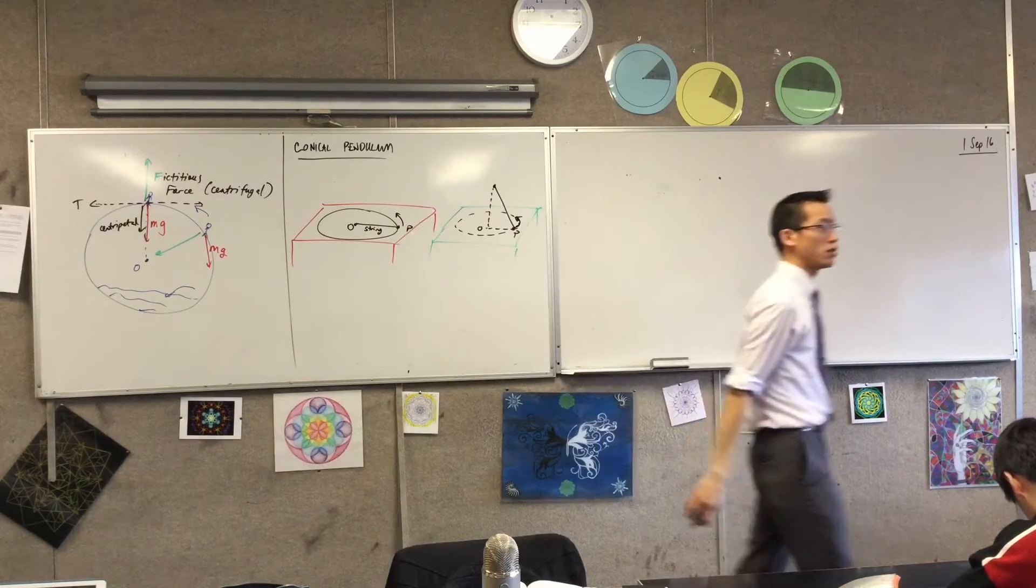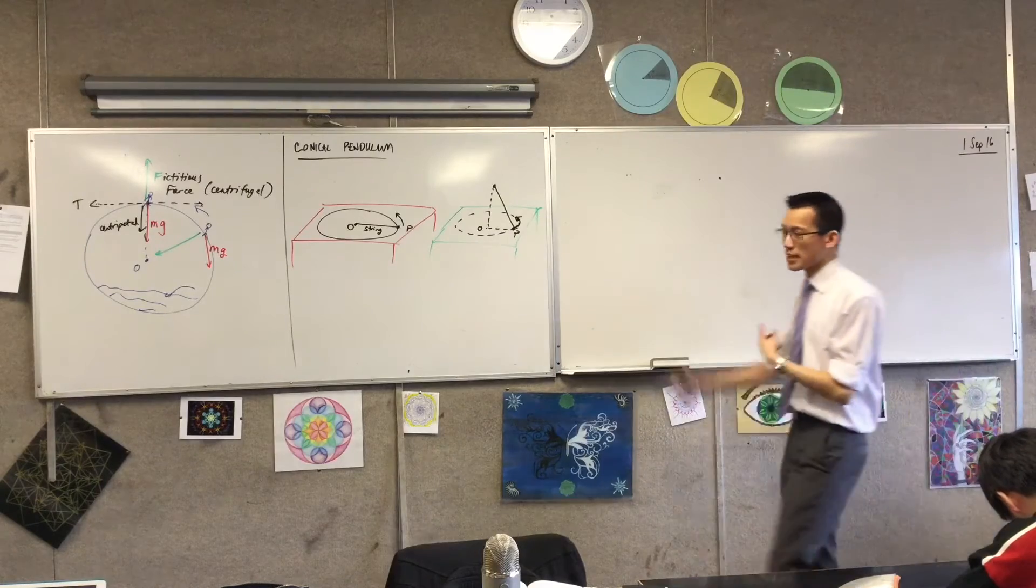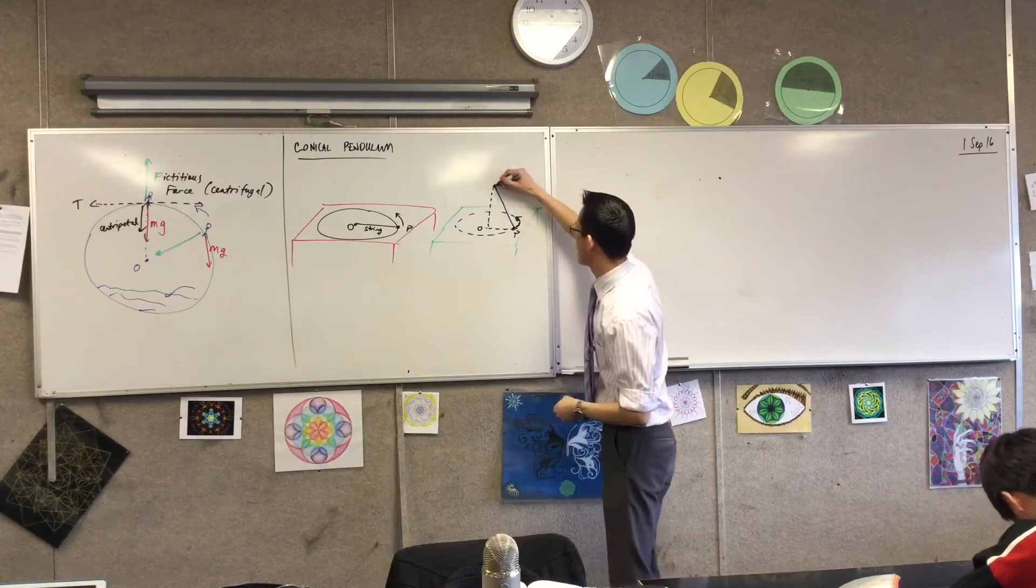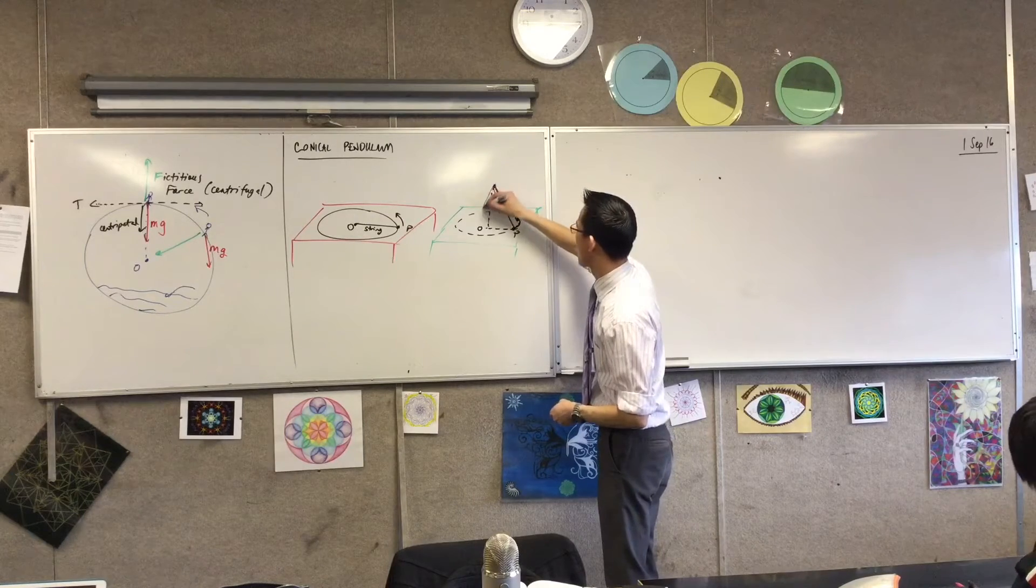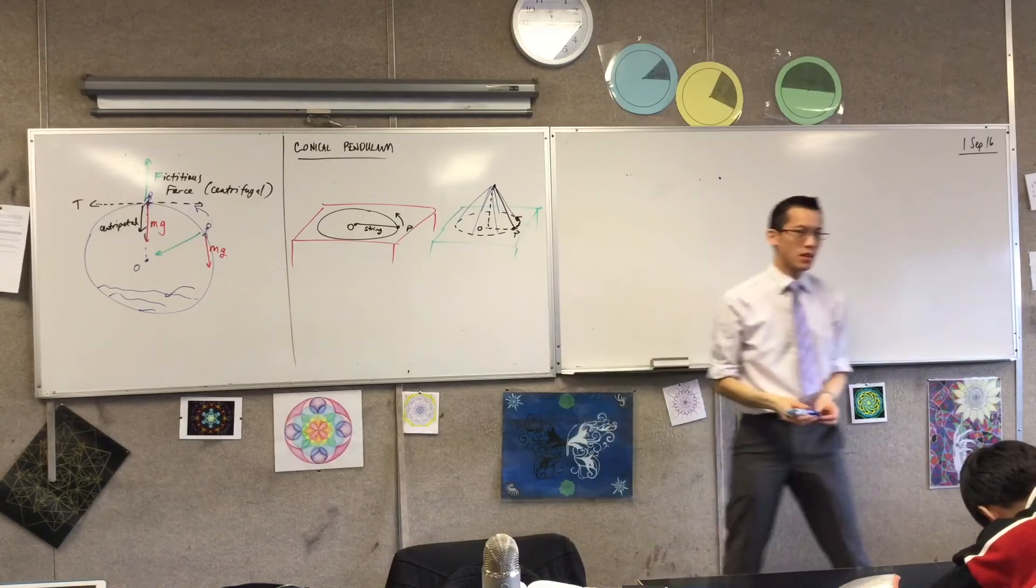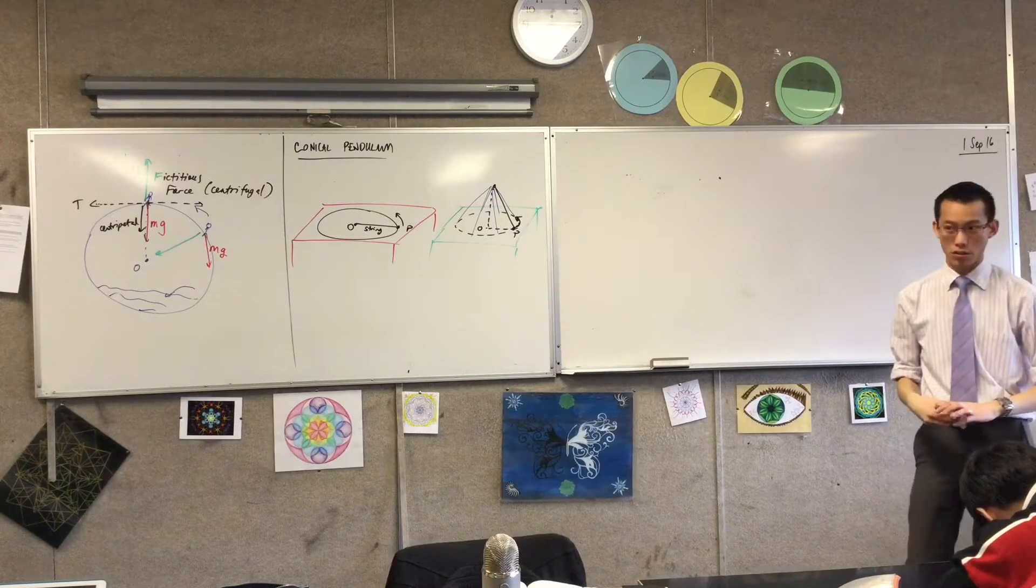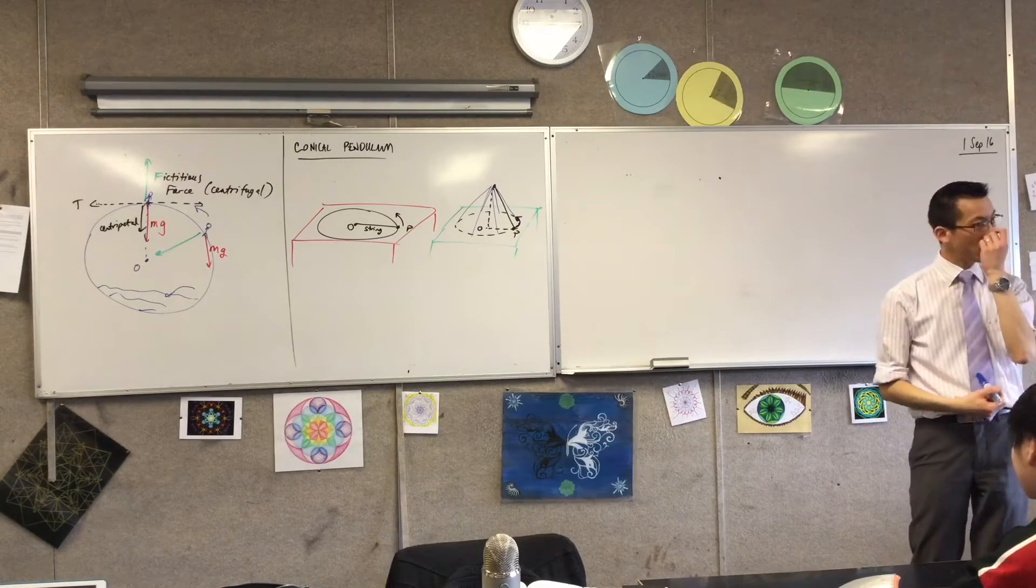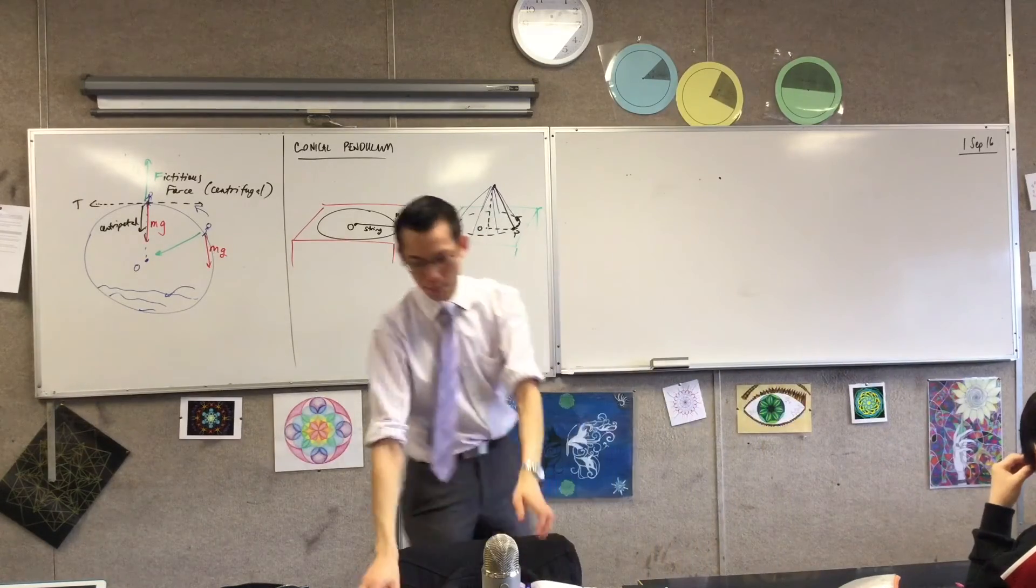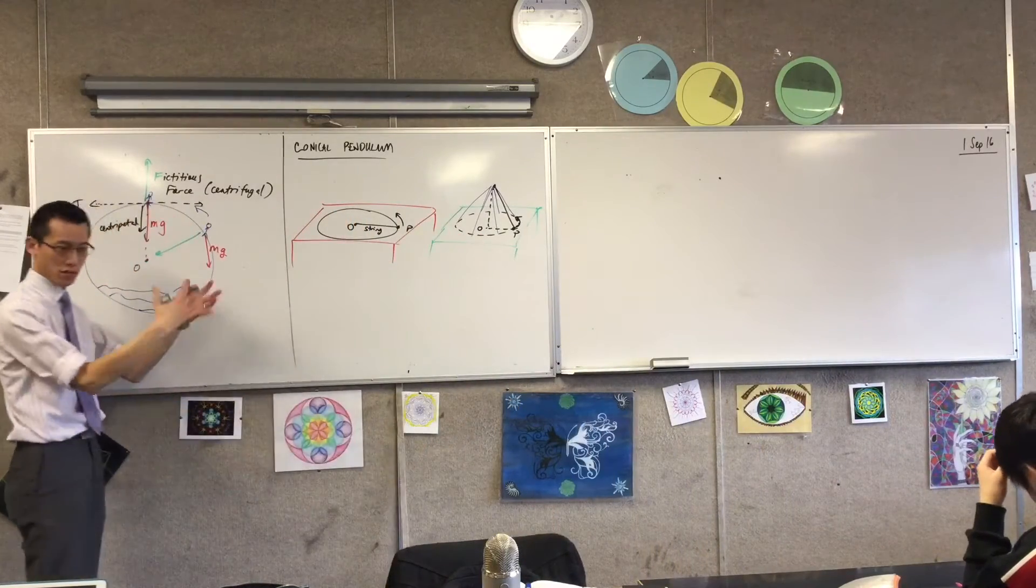It can still be uniform circular motion. But the shape that gets traced out is a cone. So that's why we call this a conical pendulum. So this has its own, there are lots of interesting things about it, which is why we sort of pull it out as a special scenario.